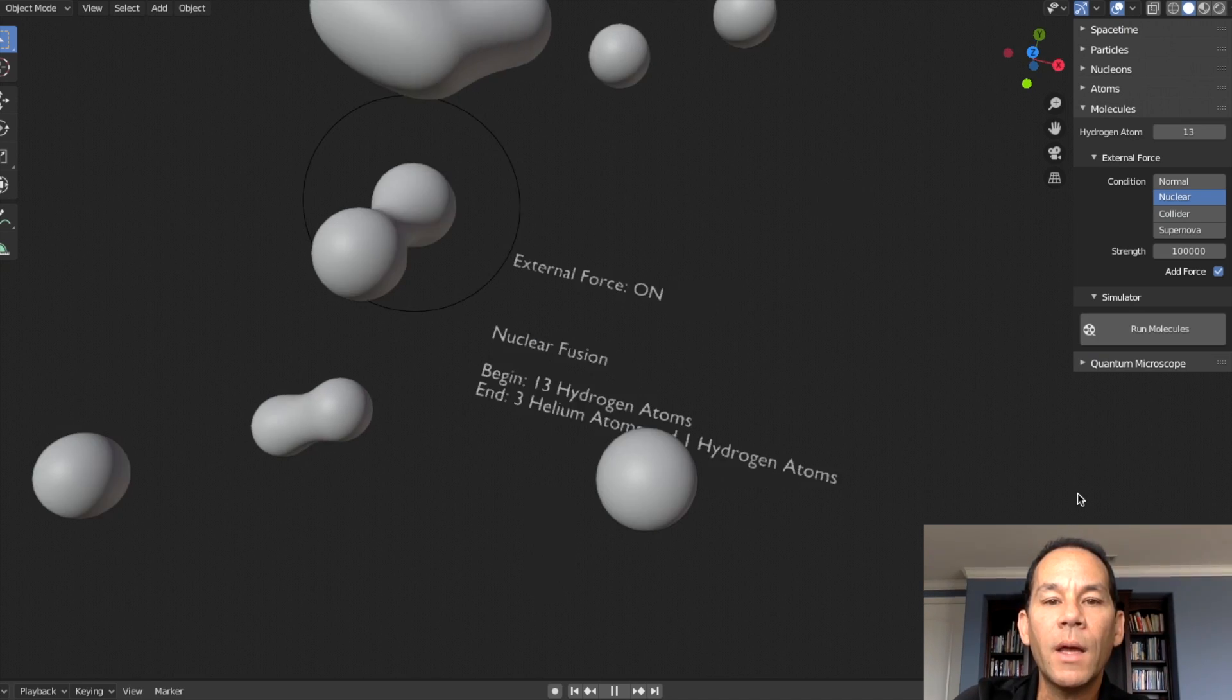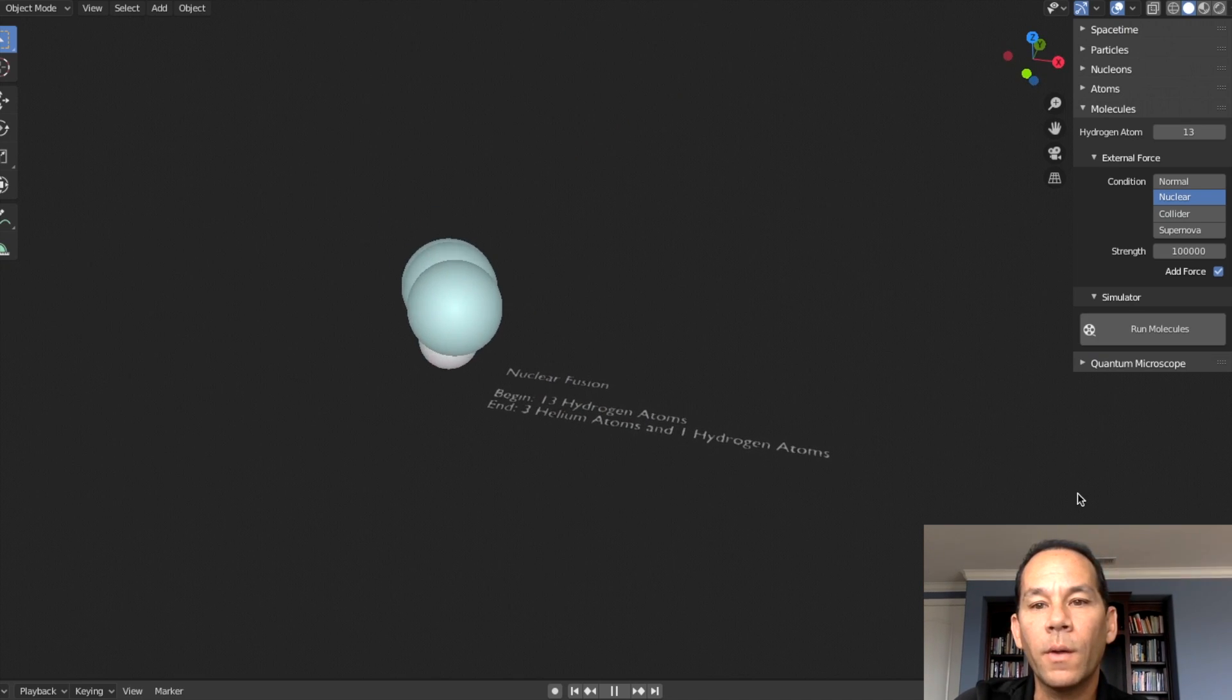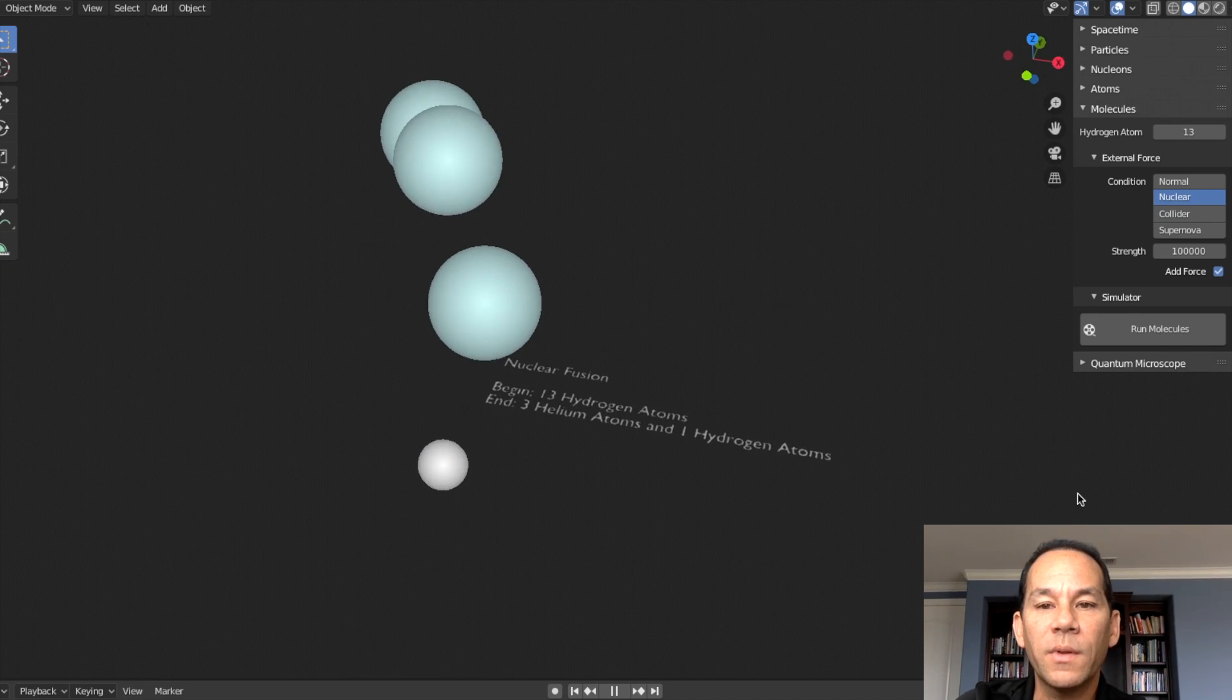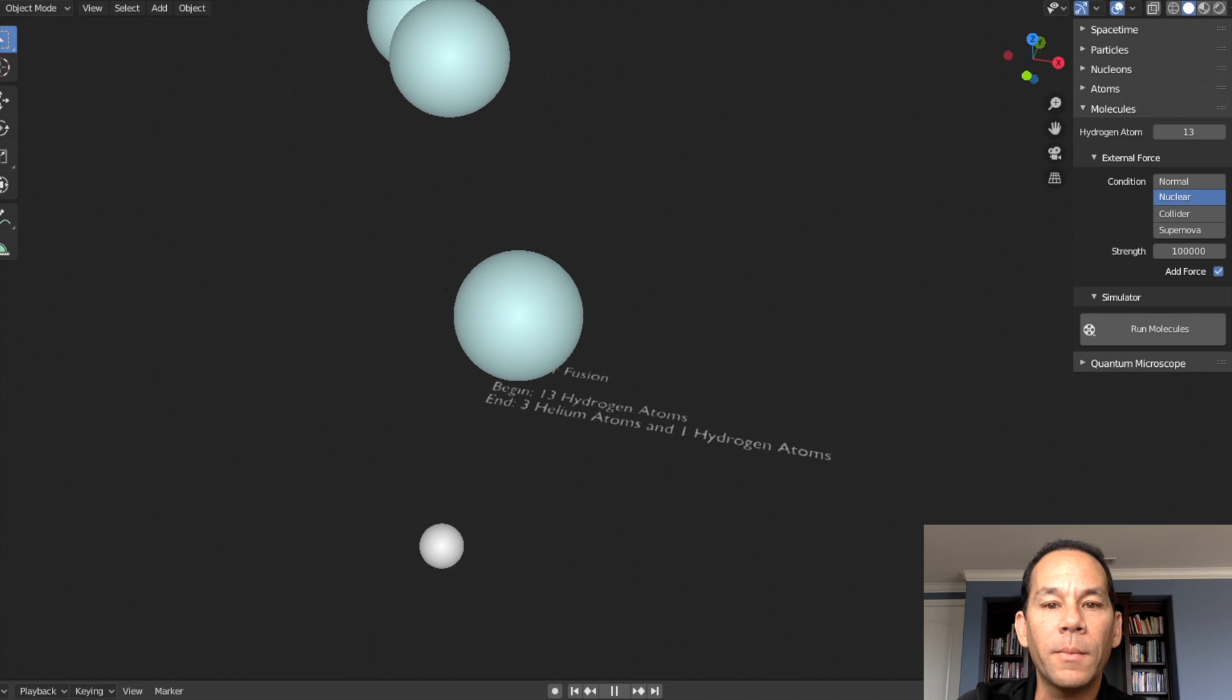Well, in the sun, the hydrogen atoms will fuse to create other atoms like helium, which you see here. A few helium atoms and a leftover hydrogen atom as well.